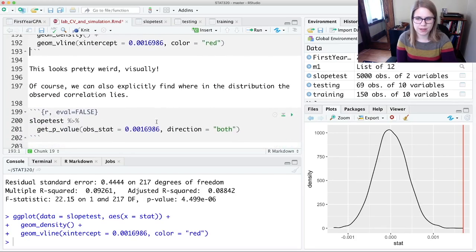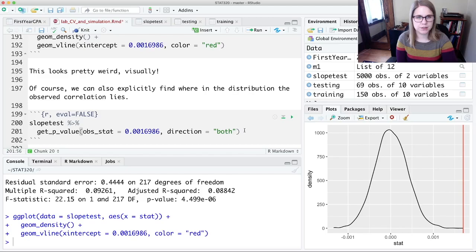We might want to find a p-value. We could use the get p-value function. And again, you're going to put in your observed statistic. And in this case, we want it to be direction both because our null and alternative hypotheses for regression are beta 1 equal to 0 and beta 1 not equal to 0.